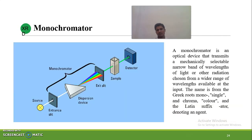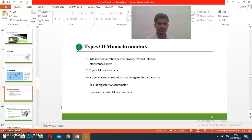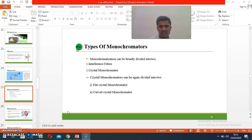The monochromator is used to isolate a narrow frequency band. Whatever the desired frequency of X-rays needed, that can be isolated. A monochromator is an optical device that transmits a selectable narrow band of wavelength chosen from a wide range of wavelengths available at the input. Monochromators can be broadly classified into three types: interference filters, and crystal monochromators — which are further classified into flat crystal monochromators and curved crystal monochromators.